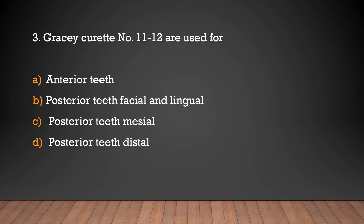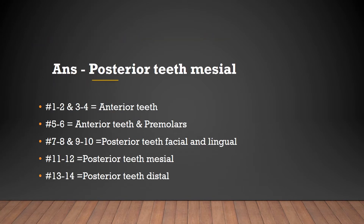Gracey curette numbers 11 and 12 are used for: anterior teeth, posterior teeth facial and lingual, posterior teeth mesial, or posterior teeth distal? Gracey curettes 1–2 and 3–4 are used for anterior teeth; 5–6 for anterior teeth and premolars; 7–8 and 9–10 for posterior teeth facial and lingual; 11–12 for posterior teeth mesial; and 13–14 for posterior teeth distal.